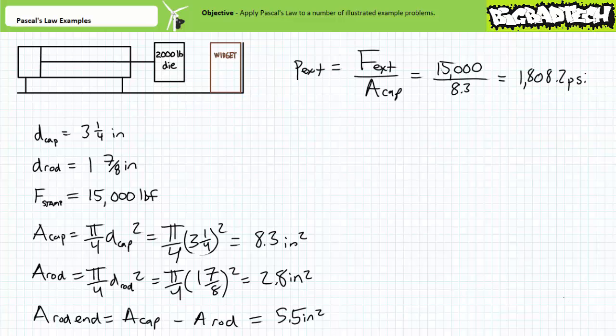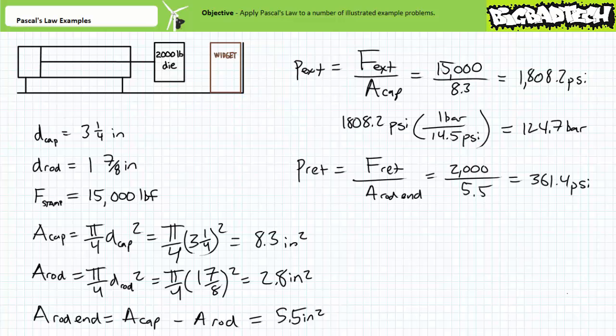Pascal's law suggests that extending with 15,000 pounds of force using the full cap end area necessitates a working pressure of approximately 1808.2 psi. A unit conversion equates this to approximately 124.7 bar. Pascal's law suggests that retracting with only 2,000 pounds of force using the ring-like rod end area necessitates a working pressure of approximately 361.4 psi. A unit conversion equates this to approximately 24.9 bar.